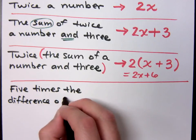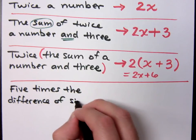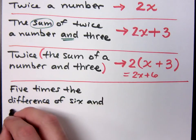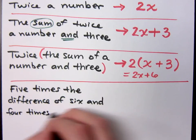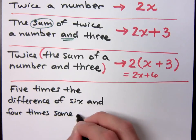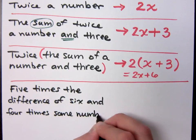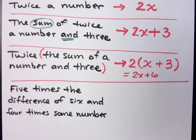It's tricky. Five times the difference of 6 and 4 times some number. Five times the difference of 6 and 4 times some number. What's the first math word you see? Five times. Five times.